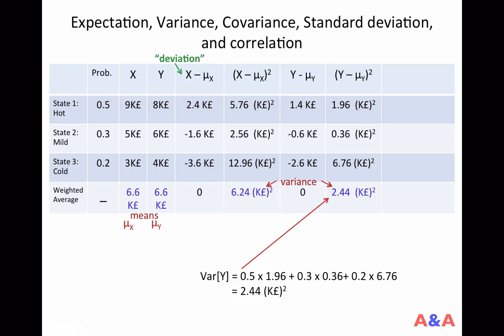The problem with variance is that it doesn't have much intuition. What does 1,000 pounds squared mean? If the original unit is meters or centimeters, the unit of variance becomes meters squared or centimeters squared. If the original unit is weeks, months, or years, the unit becomes weeks squared or month squared — which doesn't make any sense. This problem happens because in computing variance, we squared the numbers.